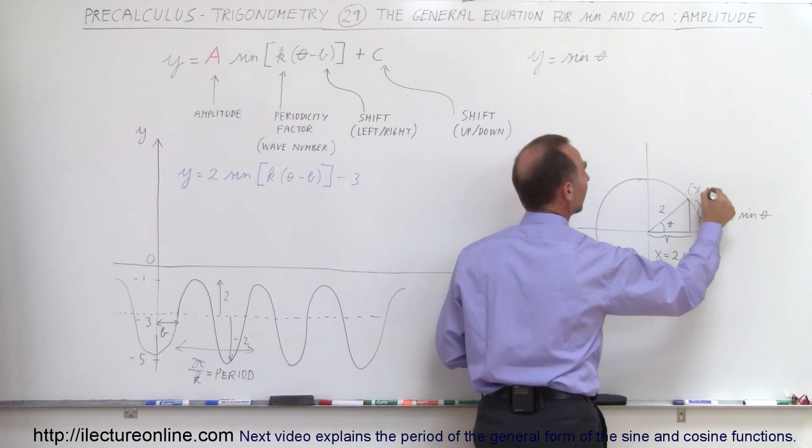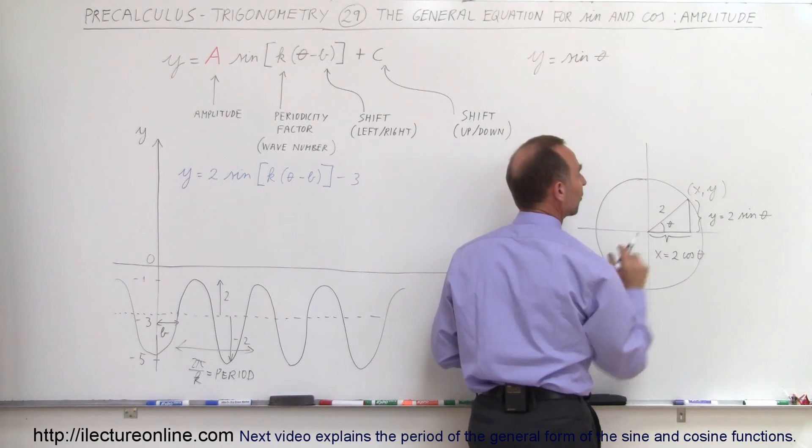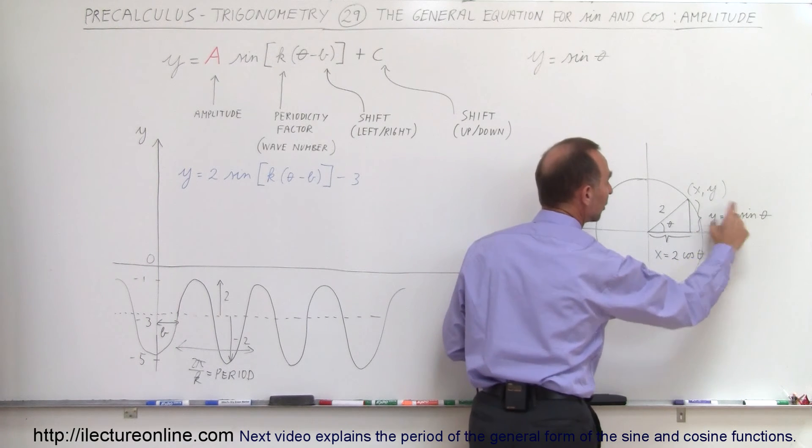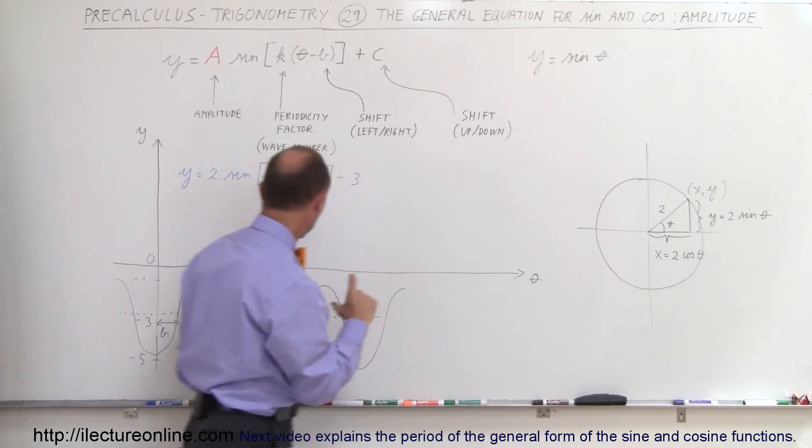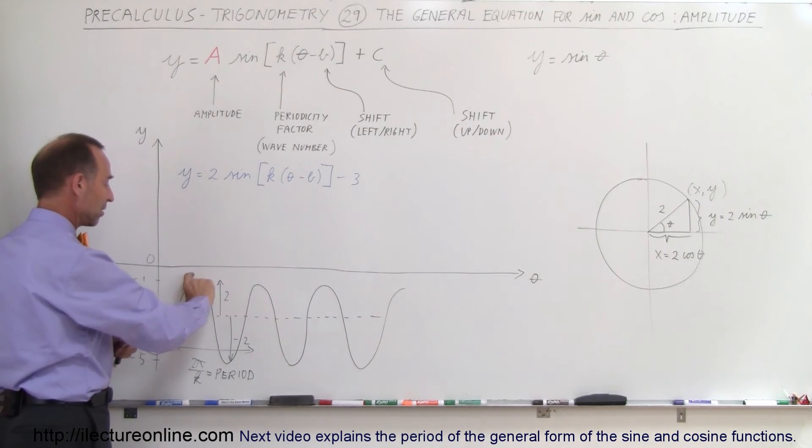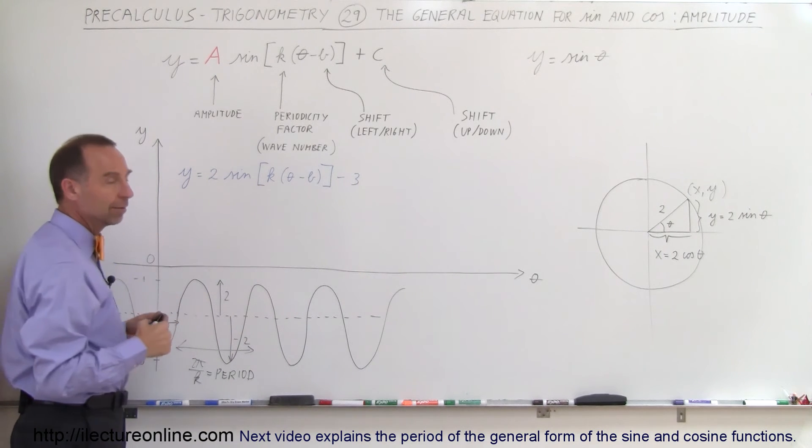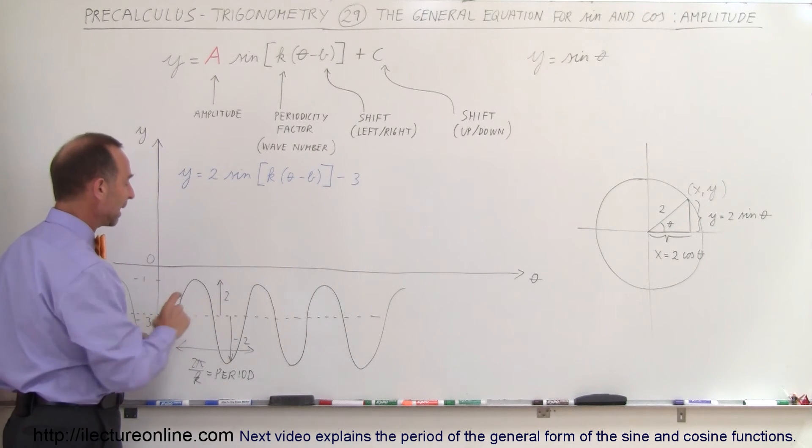And so you can see then that this value represents the x coordinate of the point on the circle. So if this is the point xy, then this represents the x value of that point and this represents the y value of that point. Now, of course, if in this case the y value is 2 times the sine of the angle, that means when you're up here, this distance here corresponds to this distance right here as you go around the, not unit circle, but the 2 unit circle if you want to call it that. So that's what we mean by the amplitude.